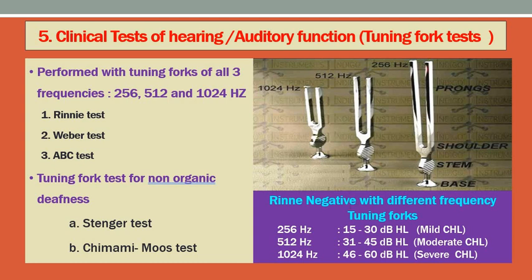Rinne negative with different frequency tuning forks indicates different levels of hearing loss: when negative on 256 Hz but positive on 512 Hz, the hearing loss is between 15 and 20 dB. When negative on 512 Hz, the loss is 31 to 45 dB. When negative on all tuning forks, that corresponds to 46 to 60 dB hearing loss. This gives us a useful estimate of the patient's hearing level using different tuning forks.